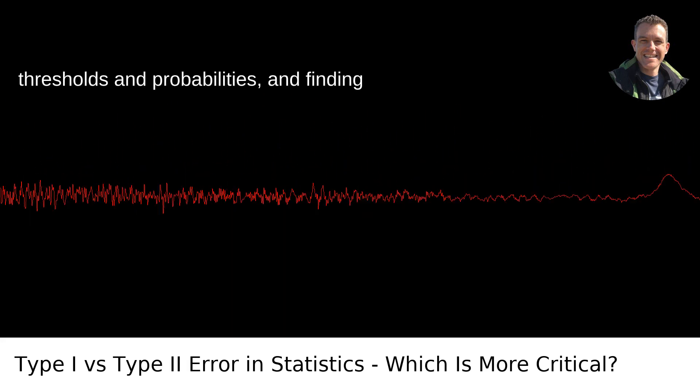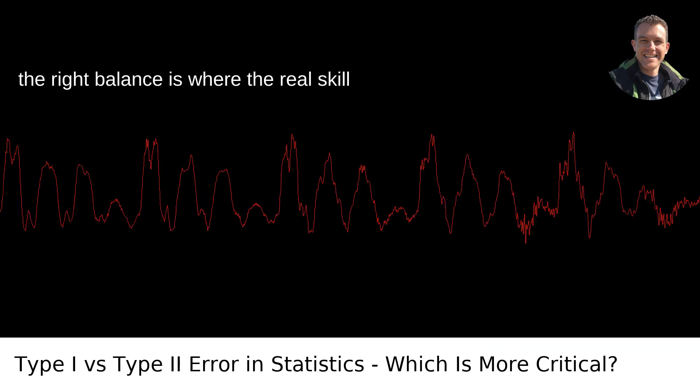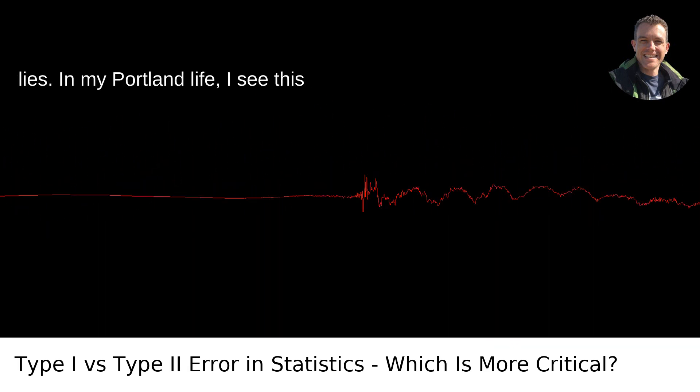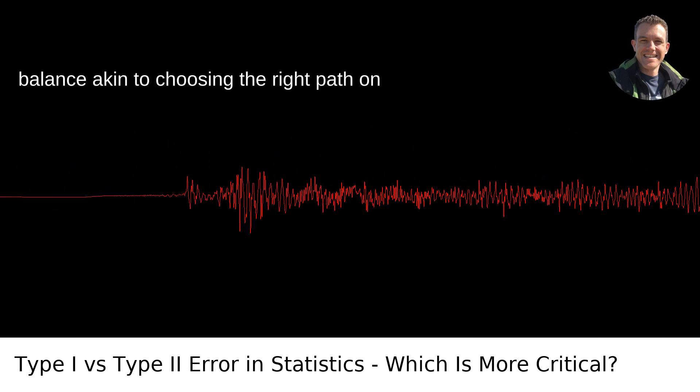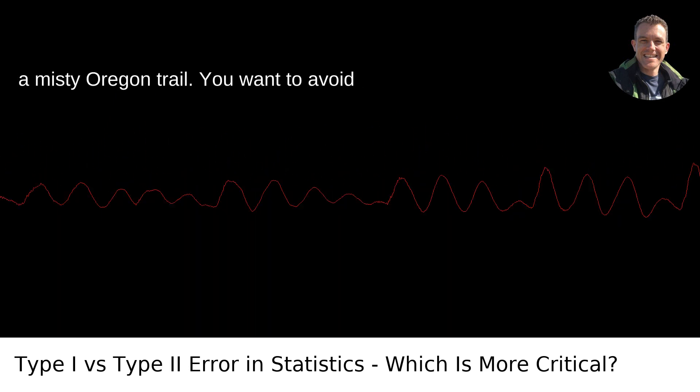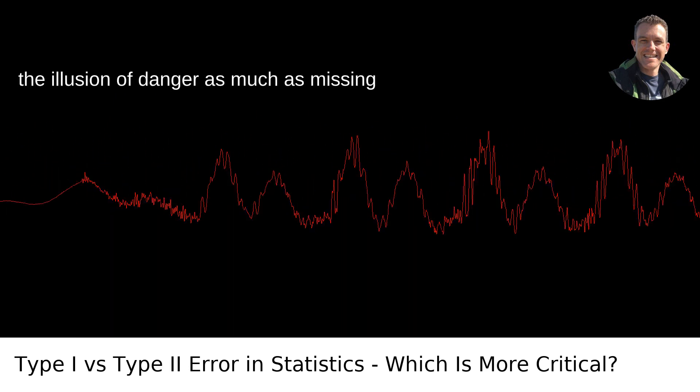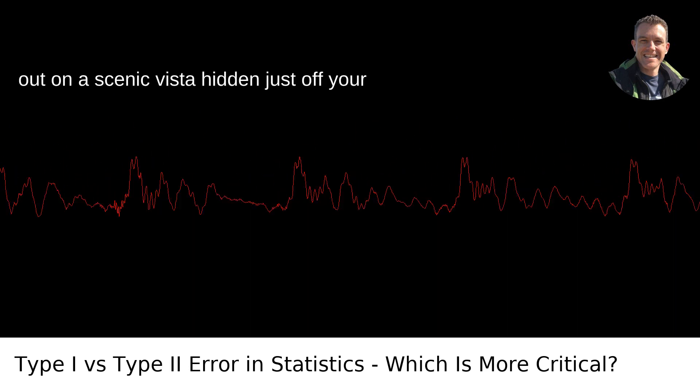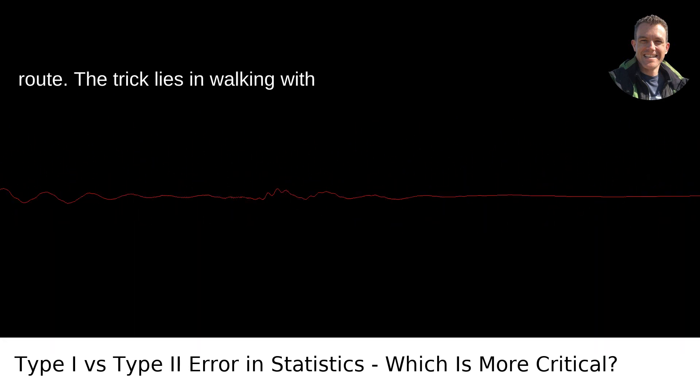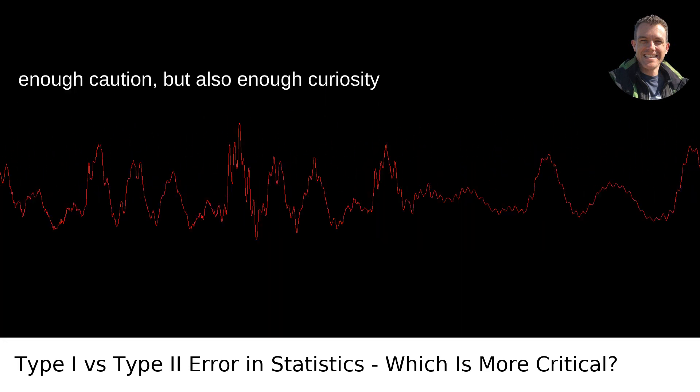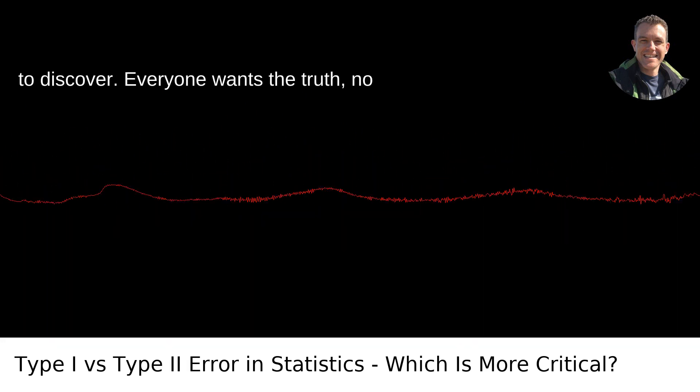It's a game of thresholds and probabilities, and finding the right balance is where the real skill lies. In my Portland life, I see this balance akin to choosing the right path on a misty Oregon trail. You want to avoid the illusion of danger as much as missing out on a scenic vista hidden just off your route. The trick lies in walking with enough caution, but also enough curiosity to discover.